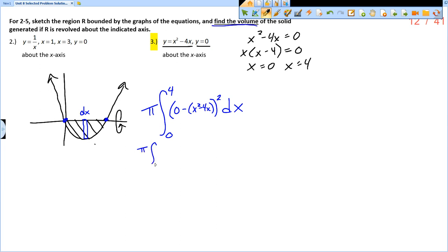So I have pi times integral from zero to four of, well, we distribute the negative and we get negative x squared plus 4x quantity squared with respect to x. So now we need to multiply that thing out in order to integrate. So I have pi times integral from zero to four of x squared times itself is x to the fourth minus, now if I have negative x squared times positive 4x, I'm going to get two of those. So minus eight x cubed and then plus 16x squared.